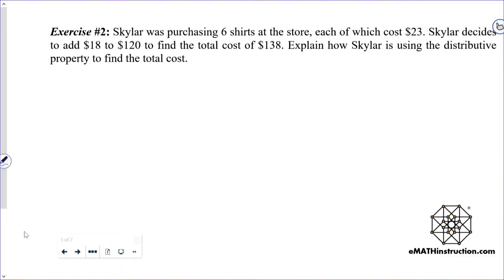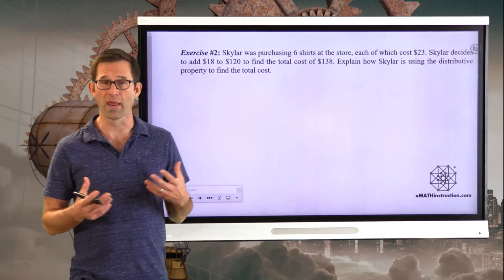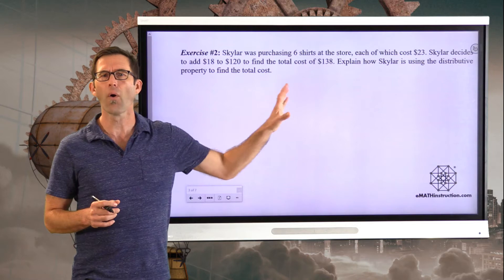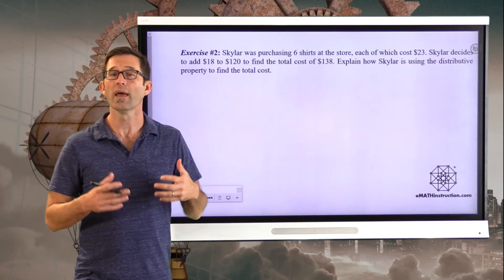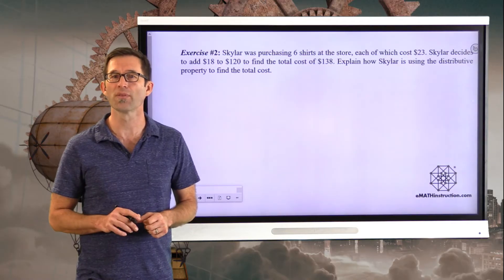Let's take a look at another example of the distributive property. Exercise number two. Skylar was purchasing six shirts at the store, each of which cost $23. Skylar decides to add 18 to 120 to find the total cost of $138. Explain how Skylar is using the distributive property to find the total cost. This is actually kind of a nice mental trick. What I'd like you to do is pause the video right now. Think about all the numbers that are being given in this problem and try to figure out how Skylar is using the distributive property.